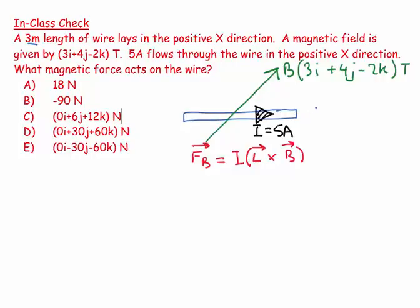So it's going to be 3i plus 0j plus 0k meters. That's my L, L equals that, as my B.